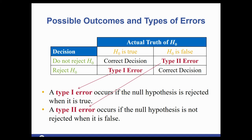In the problems you're going to solve, you won't know if you've committed a type 1 or type 2 error — that would come from repeated studies with larger sample sizes, which is not something we do in this course. For the types of problems you'll see, you'll have a scenario and be asked: if it was a type 1 error, what happens? Or if it was type 2, what happens? And which one might be worse?